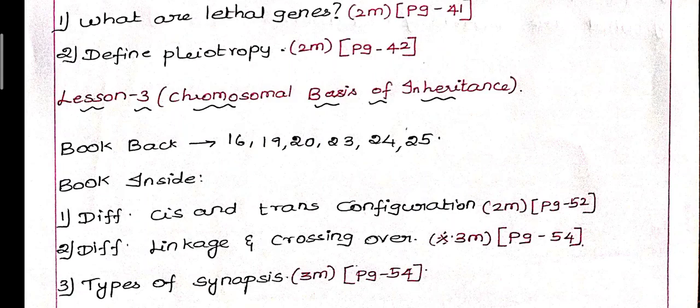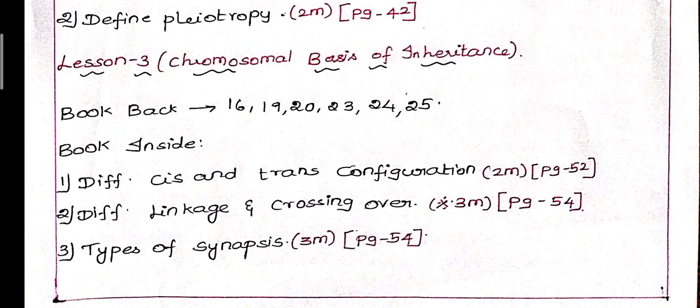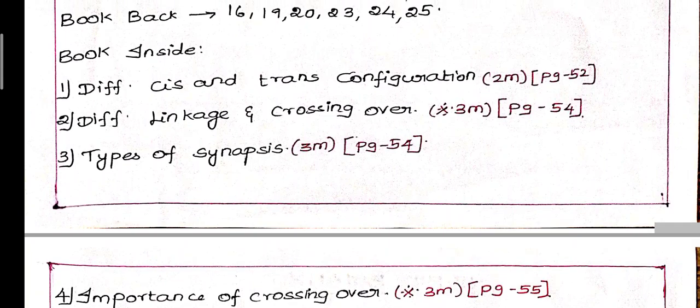Next lesson 3: Chromosomal basis of inheritance. Book back: 16, 19, 20, 23, 24, 25, these questions are important to learn. Next, booking inside this lesson: Difference between cis configuration and trans configuration, page number 52. This is 2 mark question, difference between coupling and repulsion. Trans configuration is repulsion, sometimes difference between coupling and trans repulsion. Page number 52.